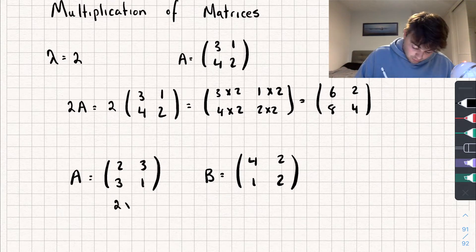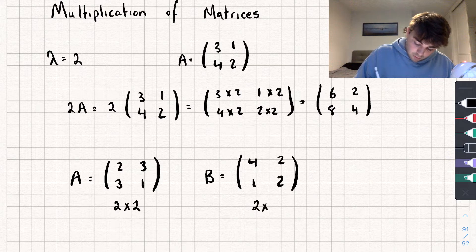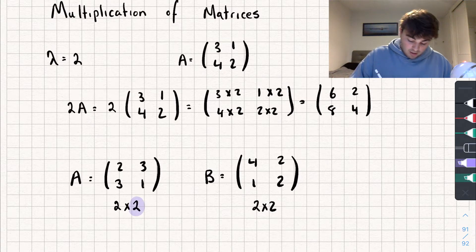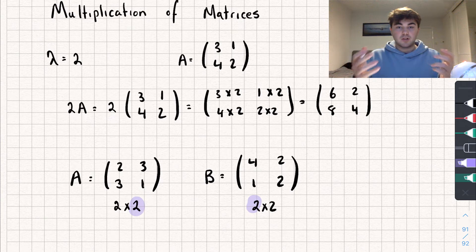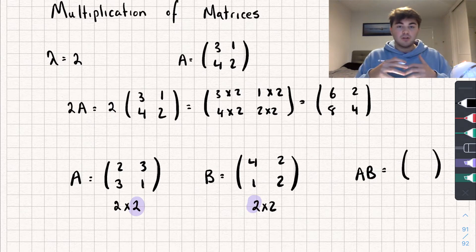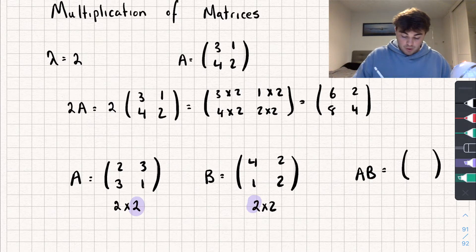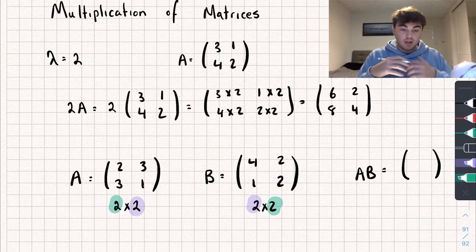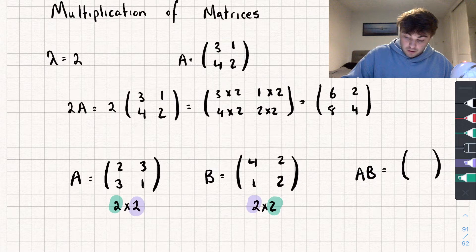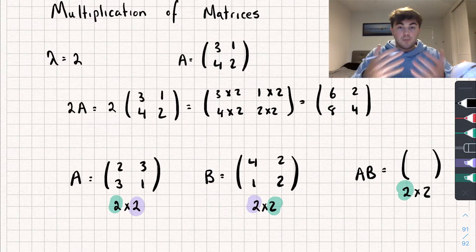Let's write the dimensions down. So we've got a 2 by 2 and a 2 by 2. Now if the number of columns in matrix A equals the number of rows in matrix B — which it does, because there are two columns in matrix A and two rows in matrix B — then we can multiply them together to get a new matrix AB. The dimensions of this new matrix AB will be 2 by 2, looking at the rows of A and the columns of B.